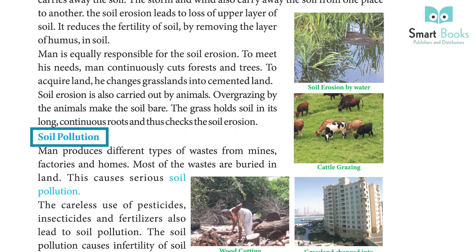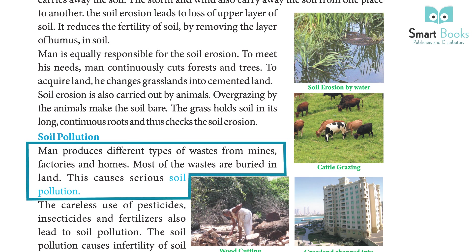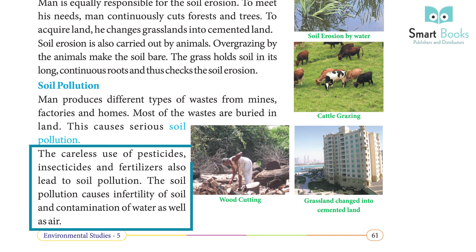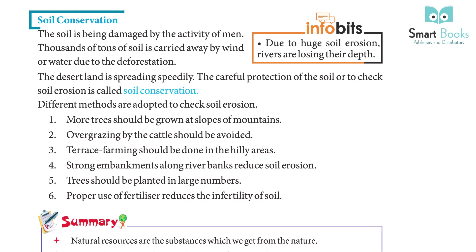Man produces different types of wastes from mines, factories, and homes. Most of the wastes are buried in land, which causes serious soil pollution. The careless use of pesticides, insecticides, and fertilizers also leads to soil pollution. Soil pollution causes infertility of soil and contamination of water as well as air.